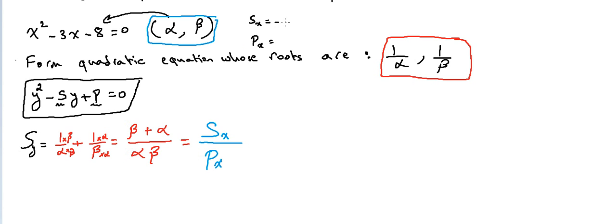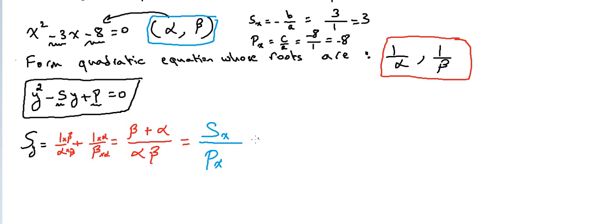Using the rules: sum = −b/a and product = c/a. In x²−3x−8=0, b=−3 so −b=3, and a=1, giving sum=3. The product is c/a = −8/1 = −8. Substituting back: Sum_y = 3/(−8) = −3/8.